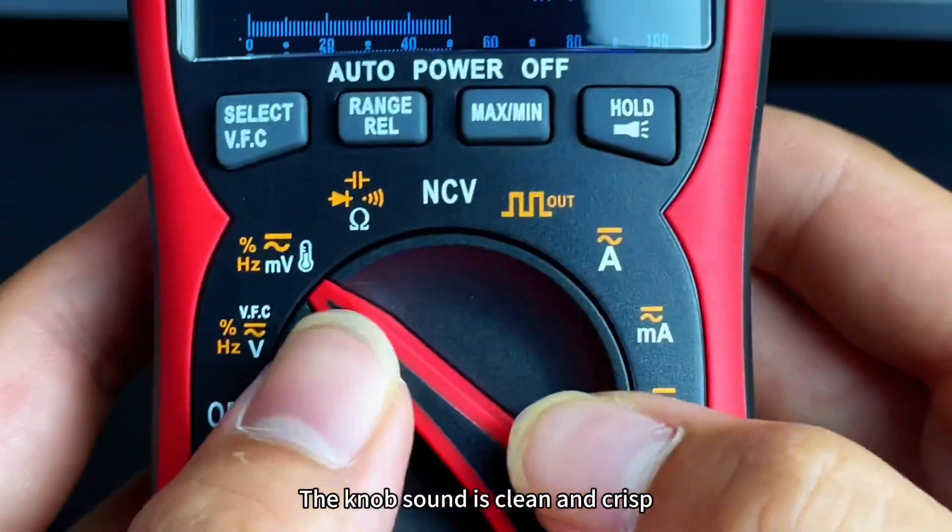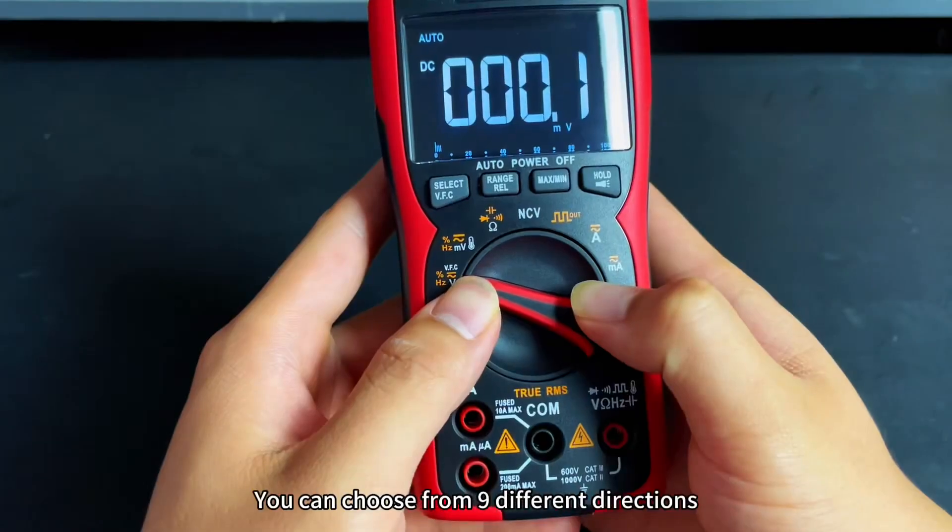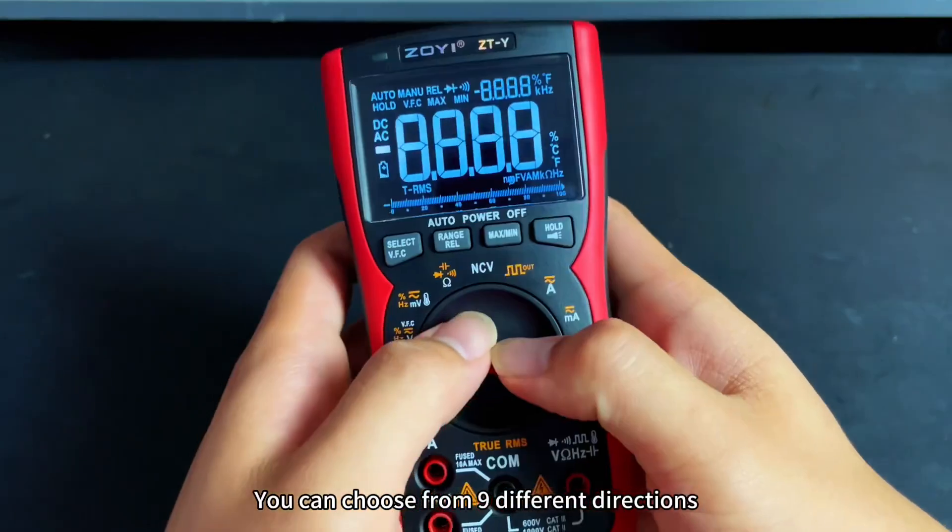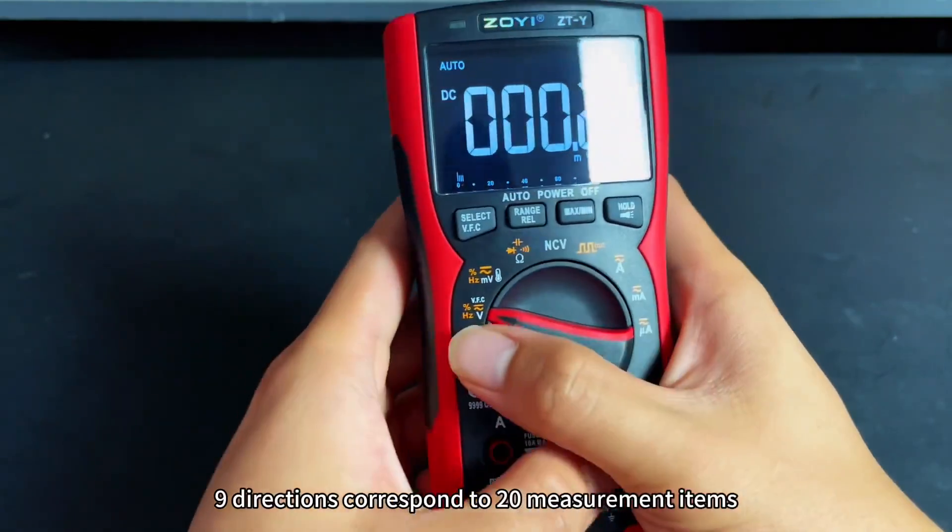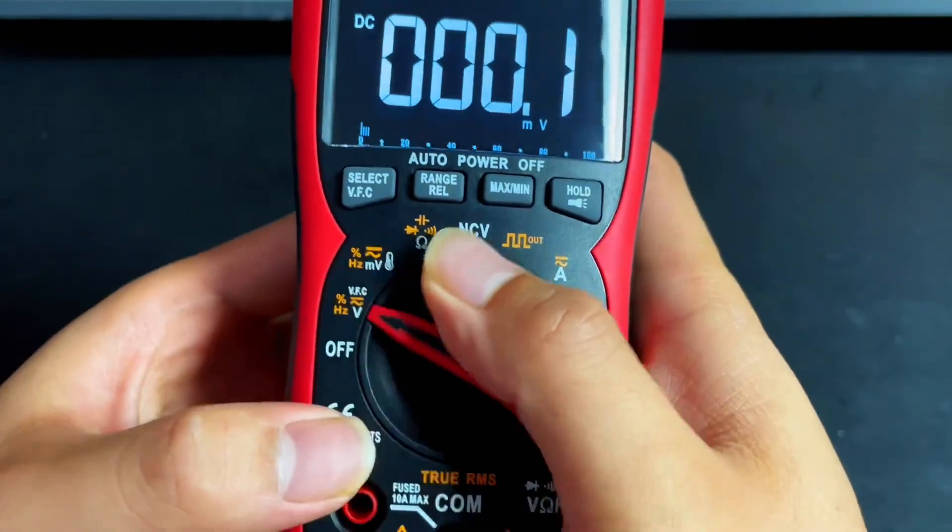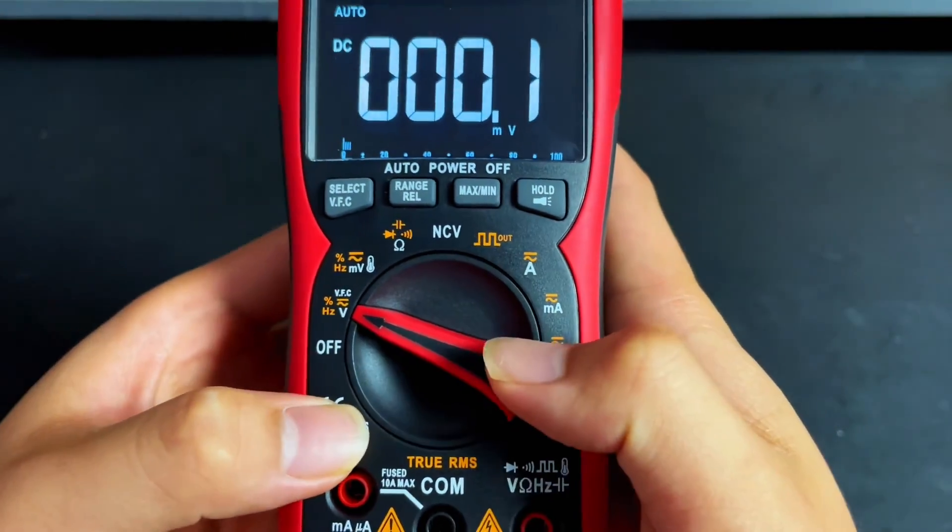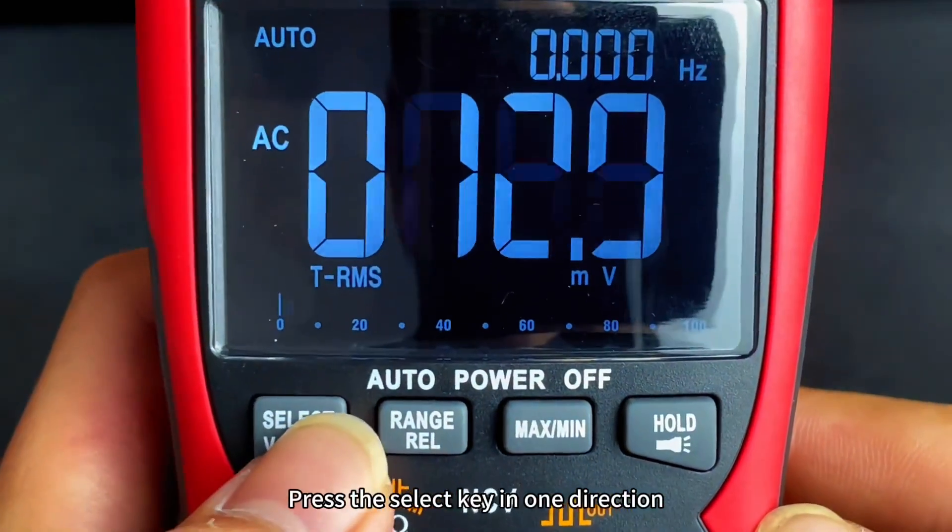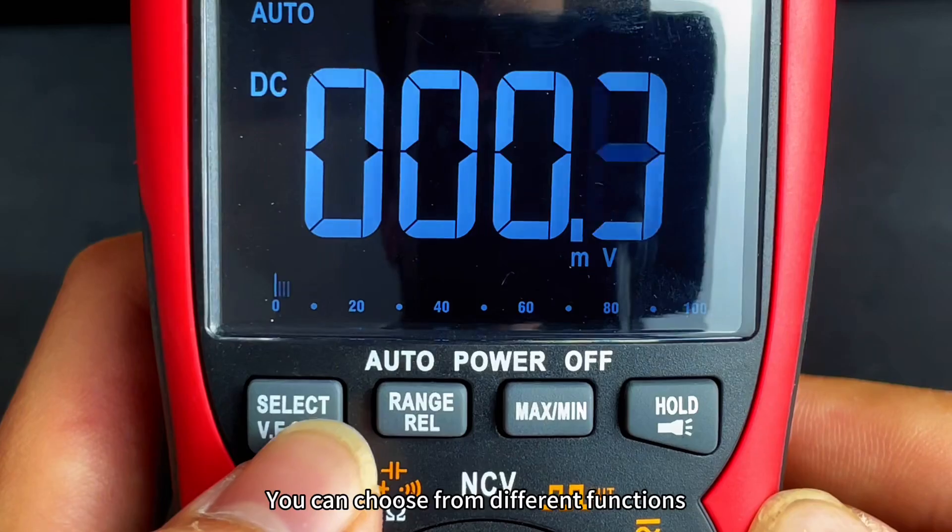The knob sound is clean and crisp. You can choose from 9 different directions, corresponding to 20 measurement items. Press the selected key in one direction and you can choose from different functions.